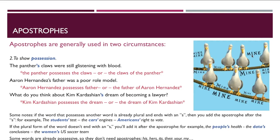Apostrophes are also used to show possession. The panther's claws were still glistening with blood. Here, the panther possesses the claws, or the claws of the panther. Aaron Hernandez's father was a poor role model — Aaron Hernandez possesses the word "father," or the father of Aaron Hernandez. What do you think about Kim Kardashian's dream of becoming a lawyer? Here, Kim Kardashian possesses the dream, or the dream of Kim Kardashian.